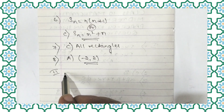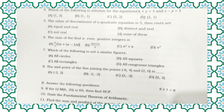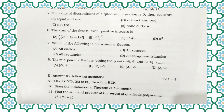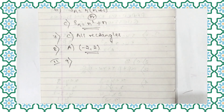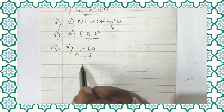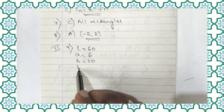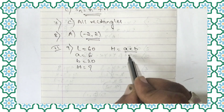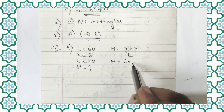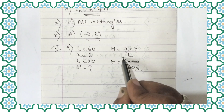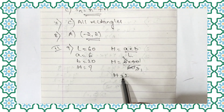Now let us move to the 9th question. If LCM of 6 and 20 is 60, then find HCF. LCM equals 60, a equals 6, b equals 20. Using HCF equals (a × b) divided by LCM: HCF equals (6 × 20) divided by 60, which equals 2. Therefore, HCF is equal to 2.